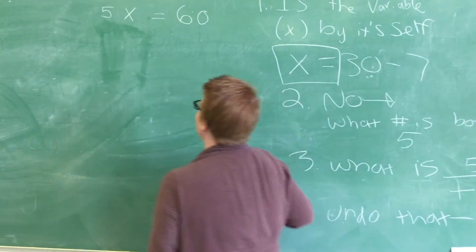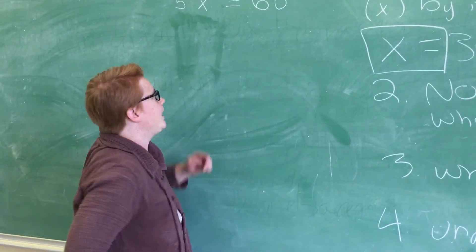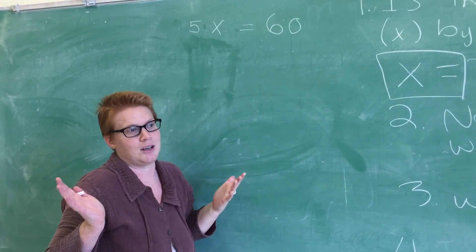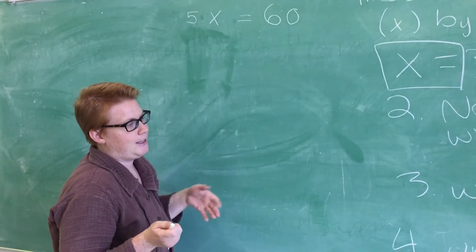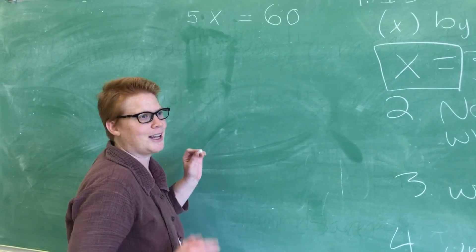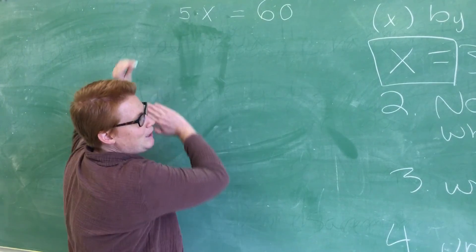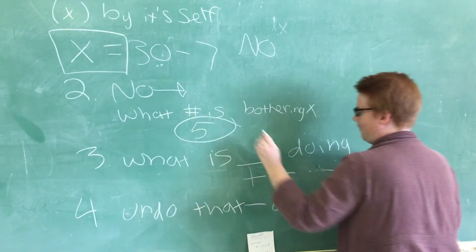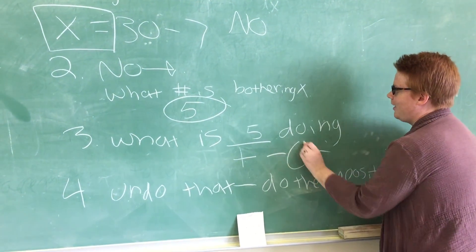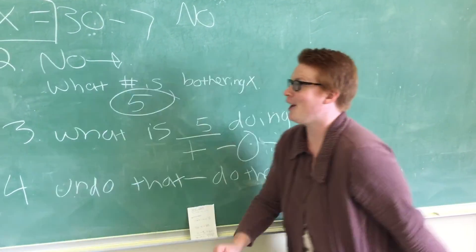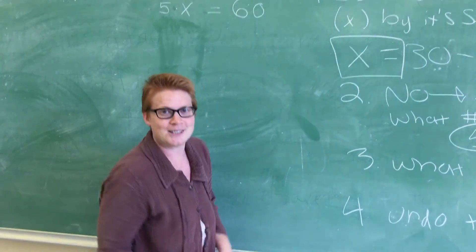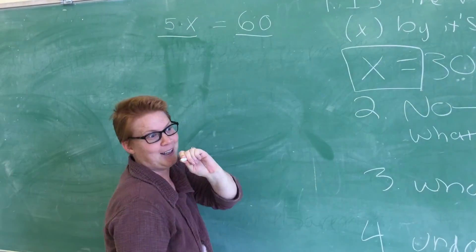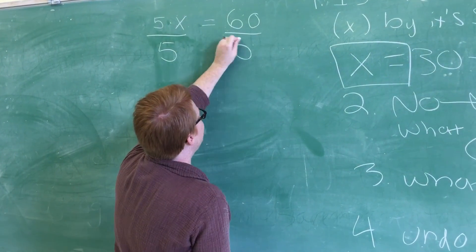So in this case, what is 5 doing? If we had a plus sign, it would be being added, which we don't. If we had a minus sign, it would be being subtracted, which it's not. If we had a division sign, it'd be division. It's actually being multiplied — there's like this little invisible dot here. So: is x by itself? No. What number is bothering x? 5. What's 5 doing? It's being multiplied. So we must undo any multiplication. We must divide by 5, because that's the number that's bothering x.